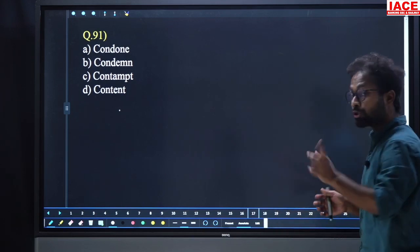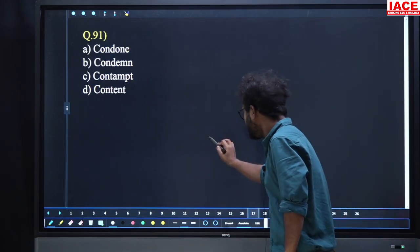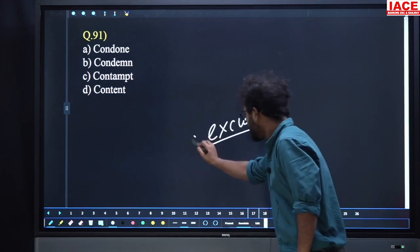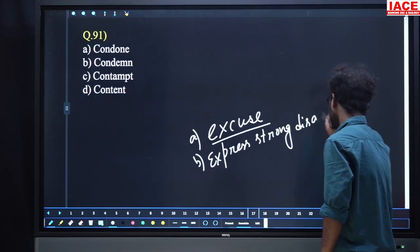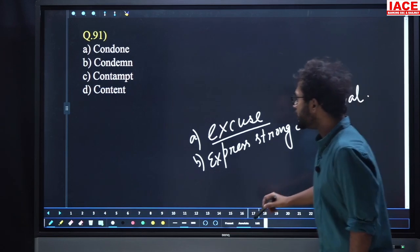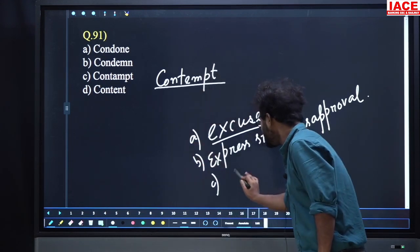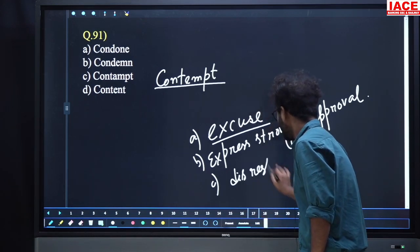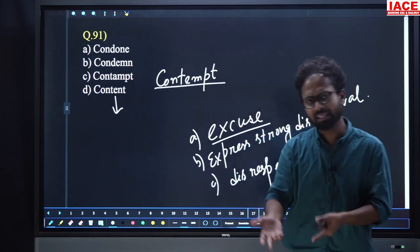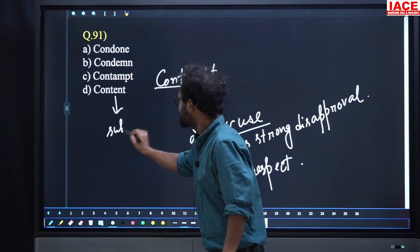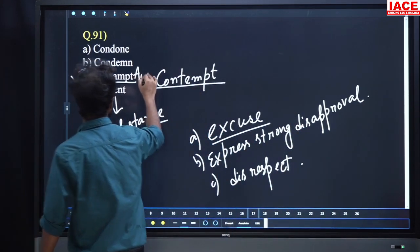Question 91: Find the wrongly spelled word. Options include condone (meaning giving excuses), condemn (express strong disapproval), contempt (disrespect), and content (substance or written material). The wrongly spelled word here is 'contempt' as presented. Option number C is the answer.